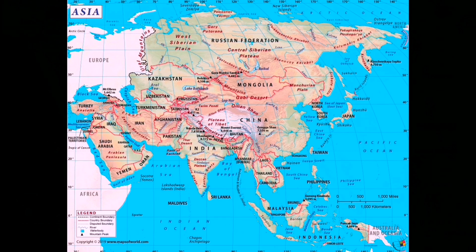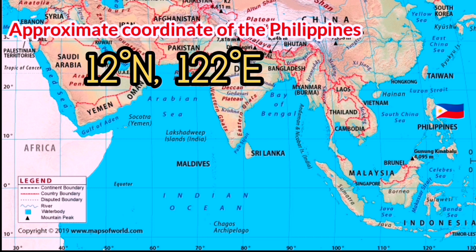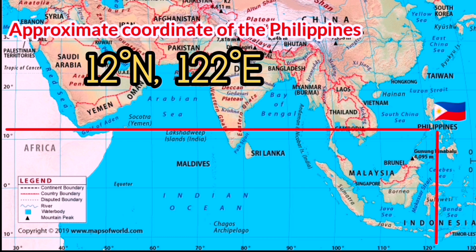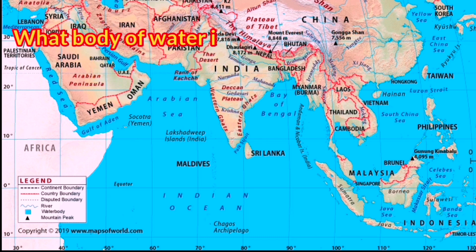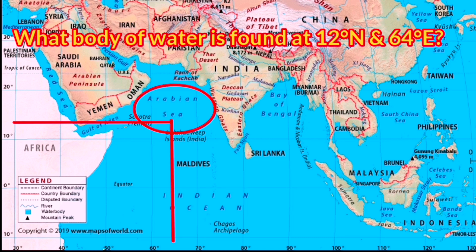The approximate coordinate of the Philippines is 12 degrees north and 122 degrees east. The basis in locating the Philippines is the intersection of the coordinates 12 degrees north and 122 degrees east. Based on these coordinates, the Philippines belongs to the northern hemisphere. Another example: the body of water found at 12 degrees north and 64 degrees east is the Arabian Sea.